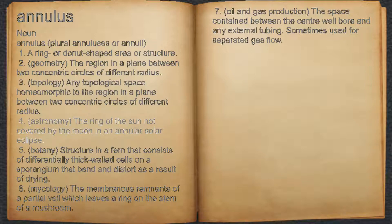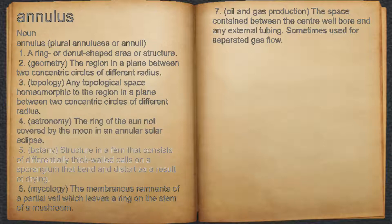4. The ring of the Sun not covered by the Moon in an annular solar eclipse. 5. Structure in a fern that consists of differentially thick-walled cells on a sporangium that bend and distort as a result of drying.